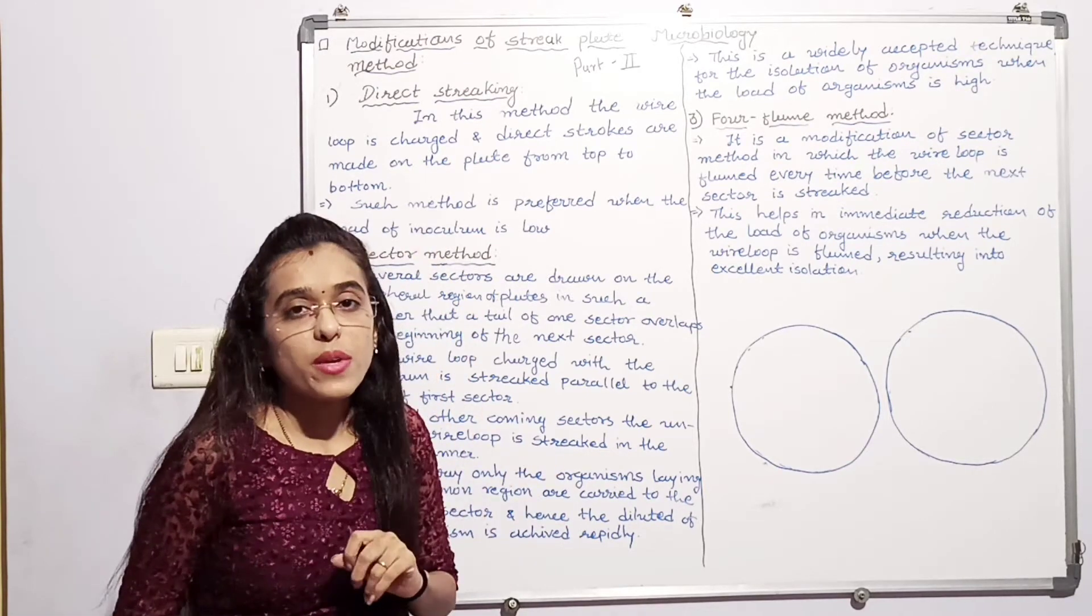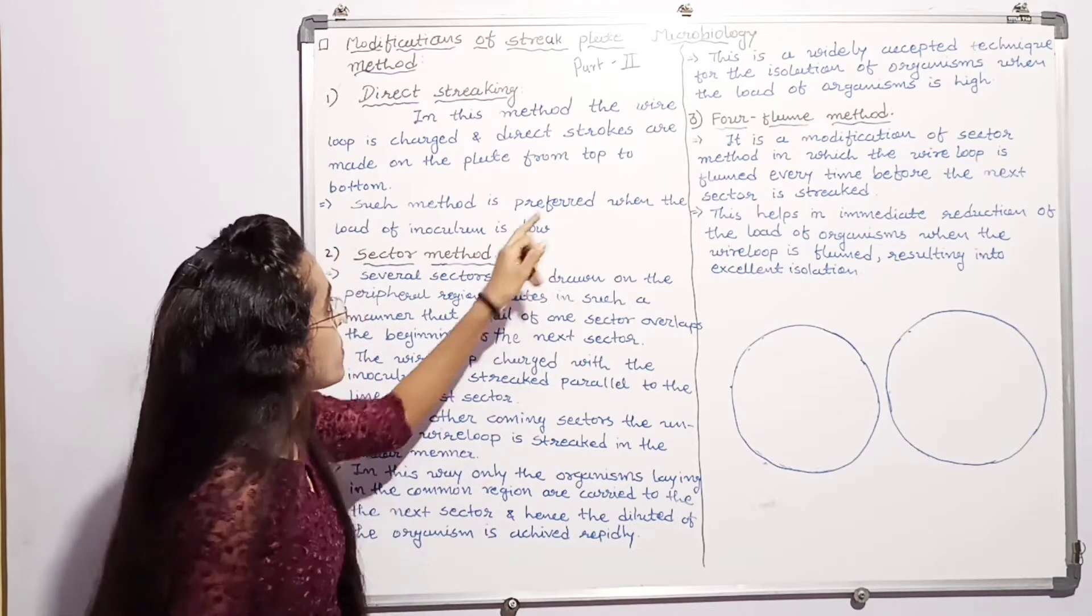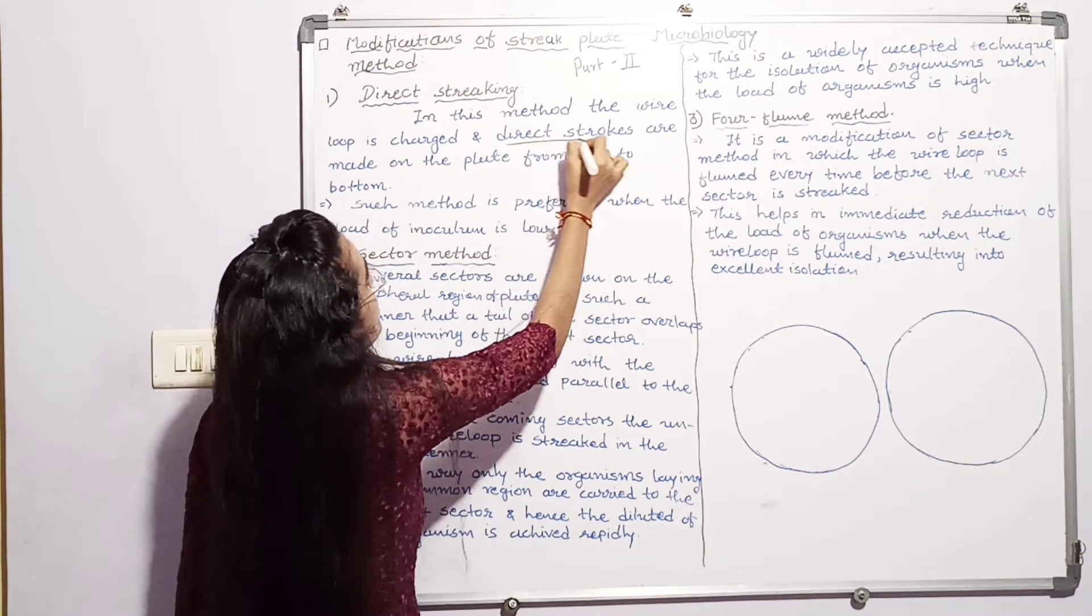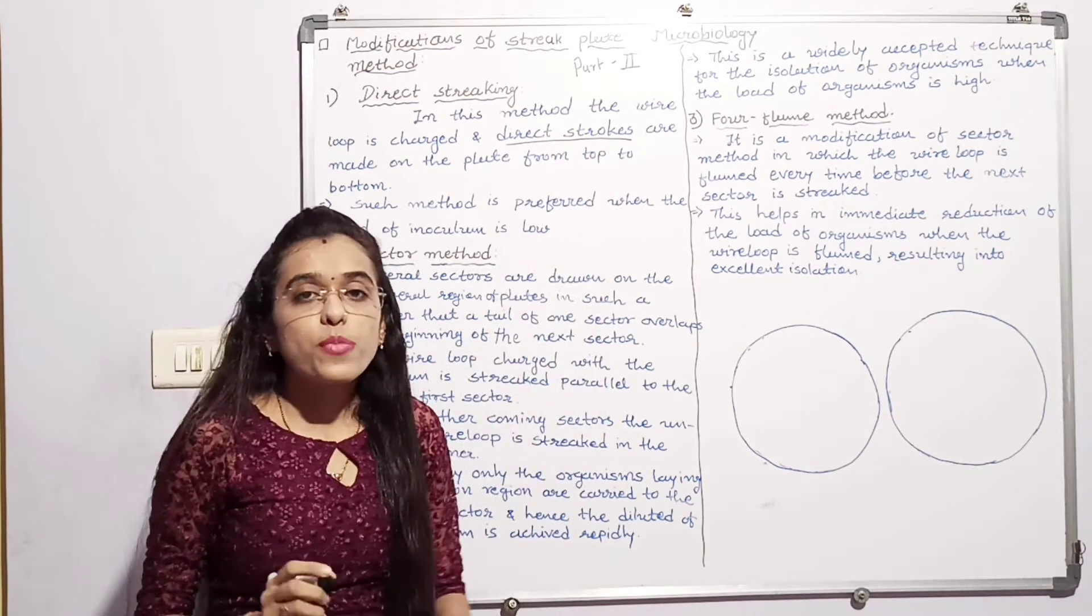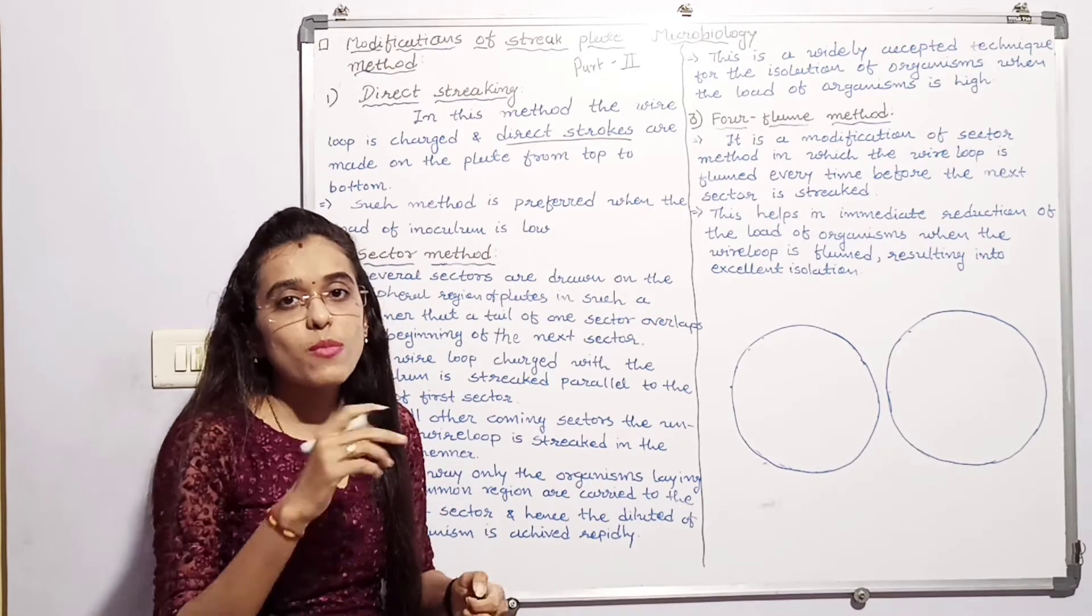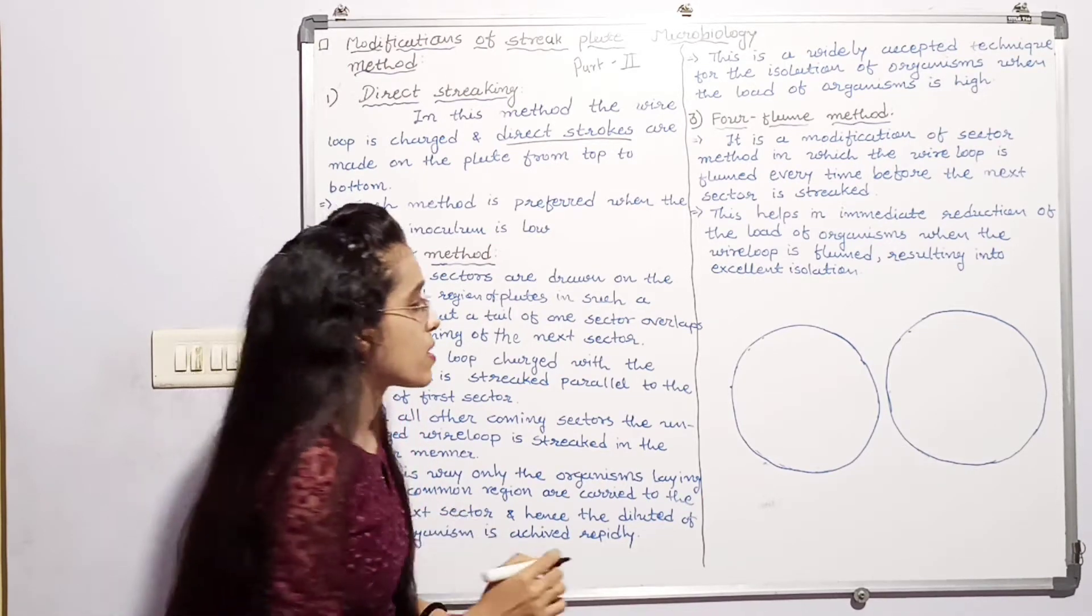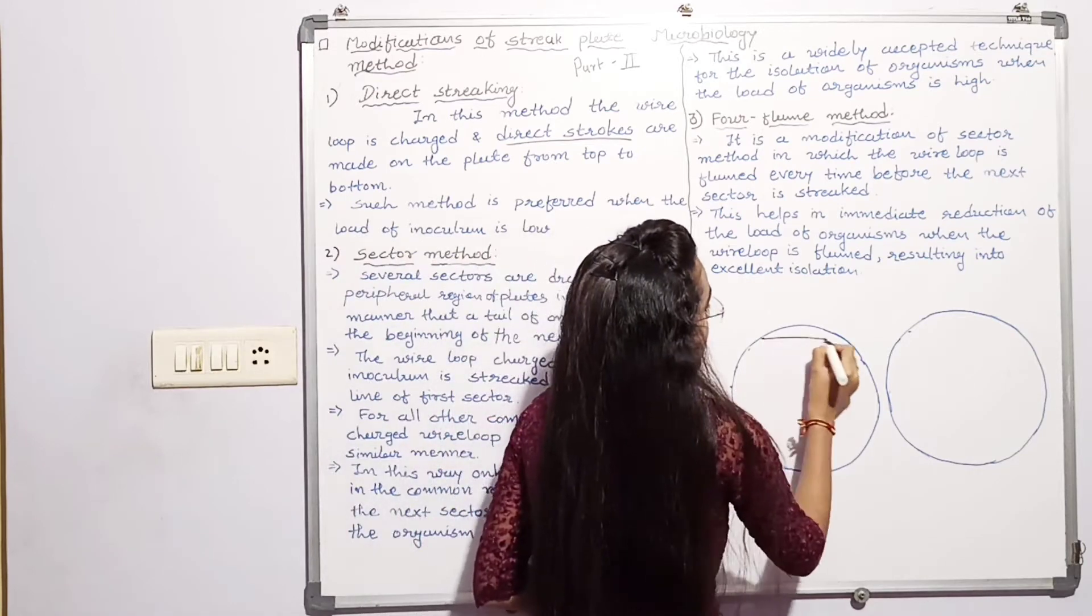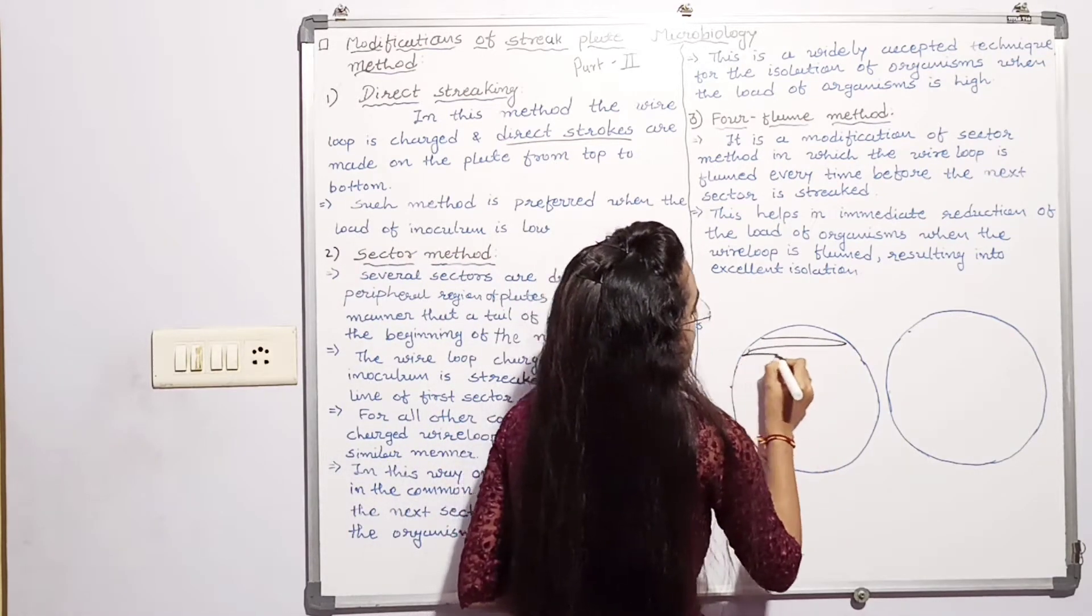First, direct streaking method. I am thinking that there is a direct stroke. The loop of the suspension is charged with direct stroke. Like this.